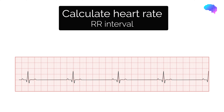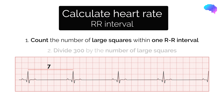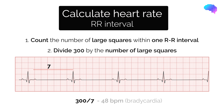To use this method, count the number of large squares within one RR interval. Next, divide 300 by this number to calculate the heart rate. In this example, there are seven large squares, therefore the calculation is 300 divided by 7, which equals 48.